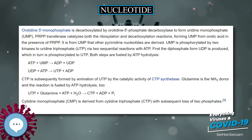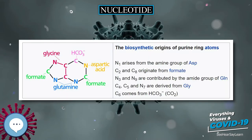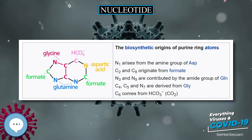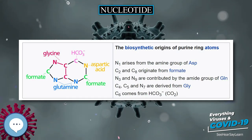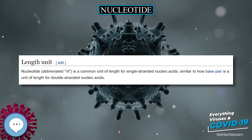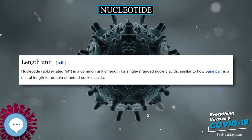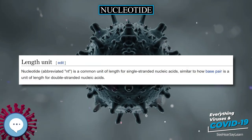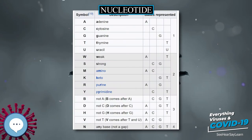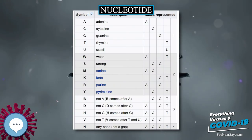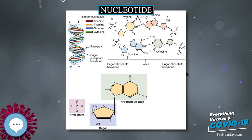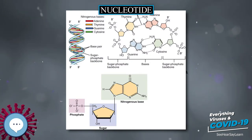Nucleic acids are polymeric macromolecules assembled from nucleotide monomer units. The purine bases adenine and guanine, and the pyrimidine base cytosine, occur in both DNA and RNA, while thymine occurs only in DNA and uracil only in RNA. Adenine forms a base pair with thymine via two hydrogen bonds, while guanine pairs with cytosine via three hydrogen bonds.